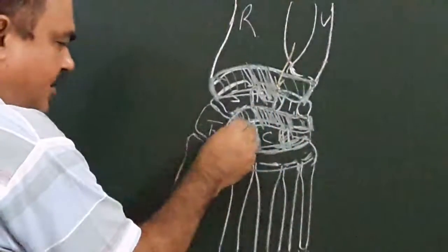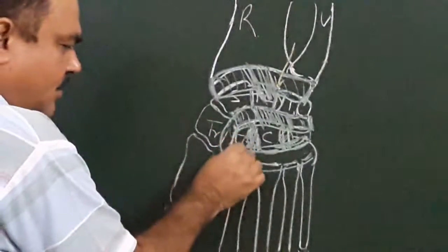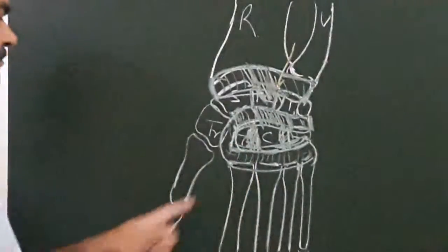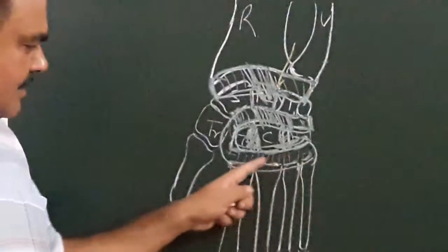This space communicates between trapezium and trapezoid with this space, that means the carpo-metacarpal space like this.